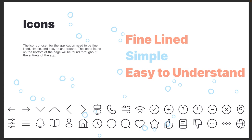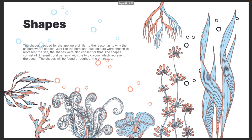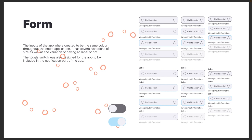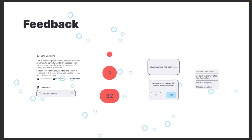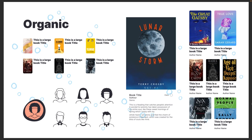The icons I wanted to be fine-lined, simple, and easy to understand — all the icons shown on the bottom are found throughout the entire application. The buttons consist of three colors, mostly blue. For the shapes, I wanted to keep something ocean-themed, so these are the shapes I chose. For the forms, I used a different color to differentiate them from the buttons. As for feedback, here are some of the things that will be found throughout the app — the navigation and some of the cards that I used.